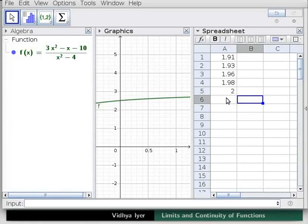In column A, from cells 6 to 10, type 2.01, 2.03, 2.05, 2.07 and 2.09.